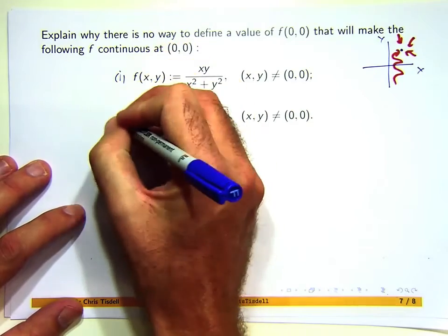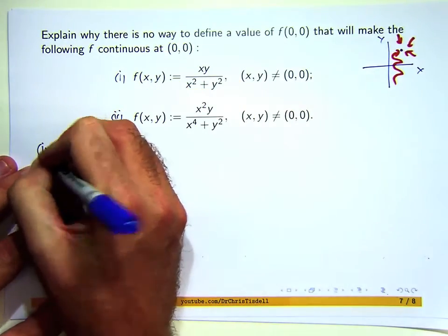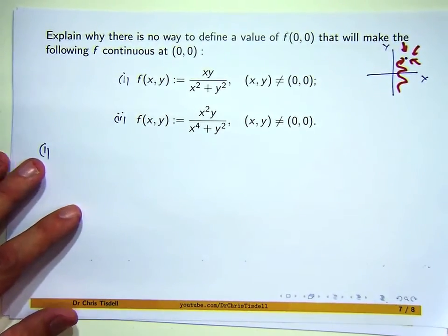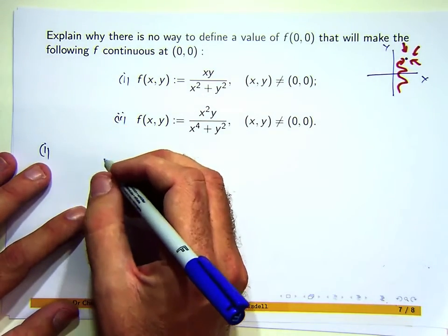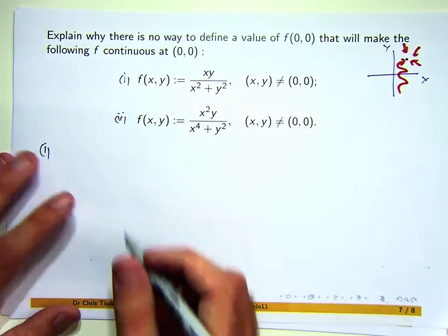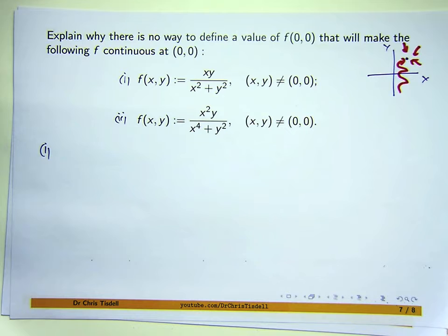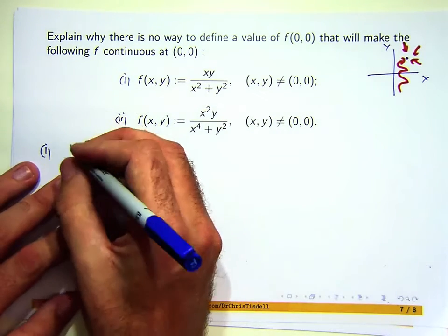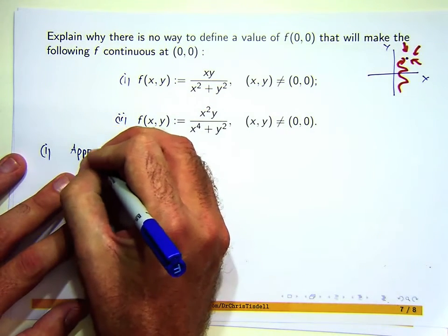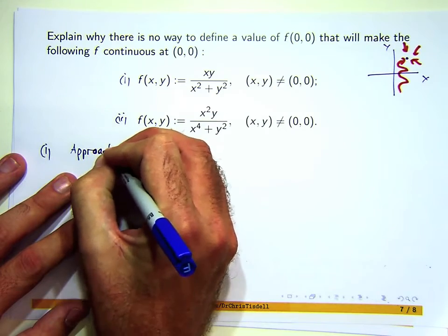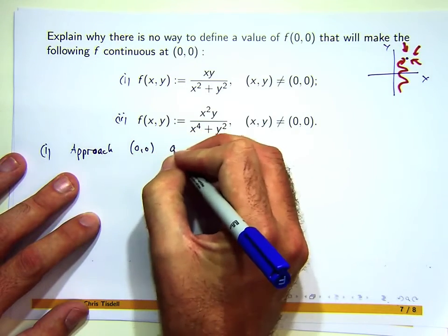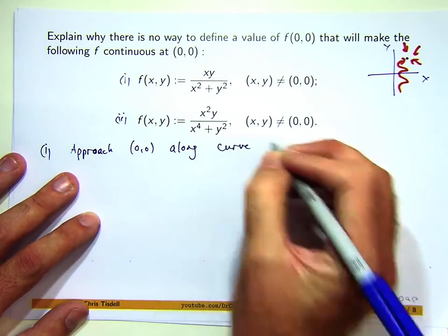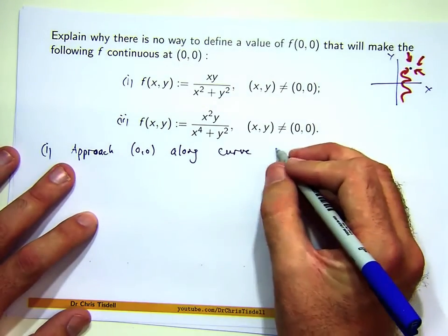Let's go with parts one and two. We're going to use an idea called the two-path test: if you can find two paths where the limits are not equal to each other, then the limit can't exist and therefore it can't be continuous at the point. So let's approach (0,0) along a curve — I'm just going to approach it along straight lines.